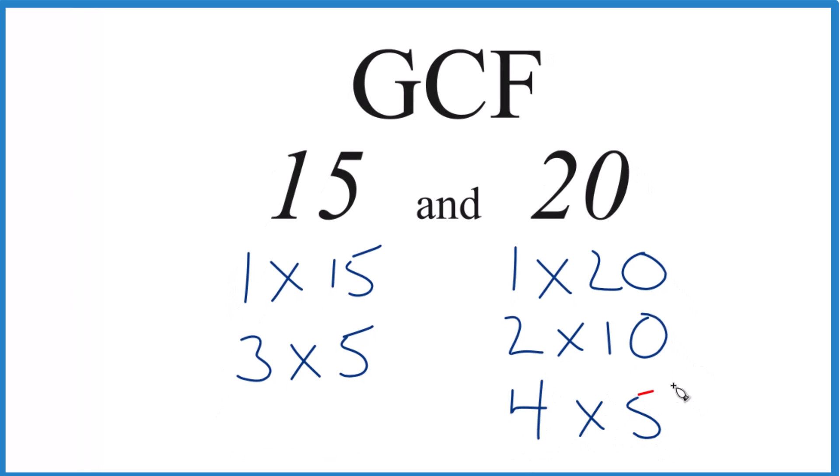All of those equal 20. So if we look for the factors that are common between 15 and 20, we see 1. So 1 goes into 15 evenly, 20 evenly. What else? Looks like 5 is the greatest common factor between 15 and 20.